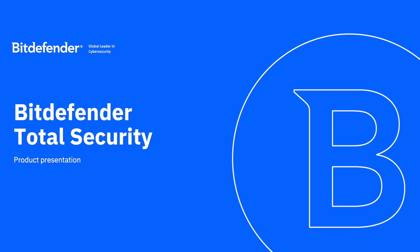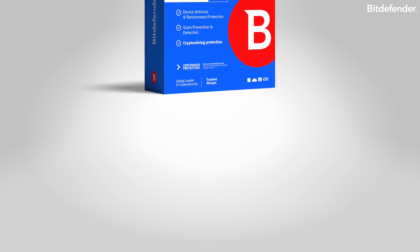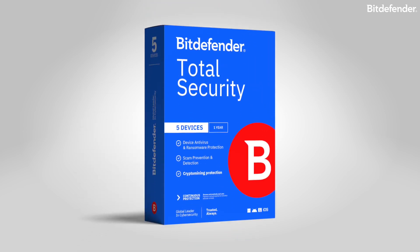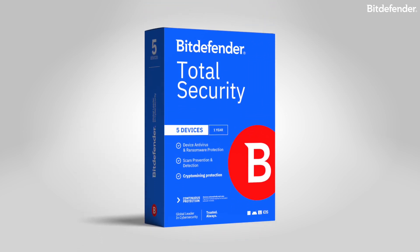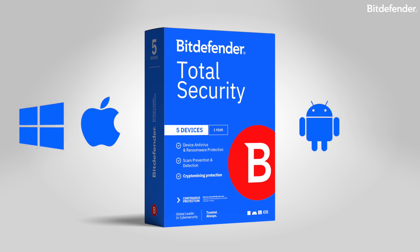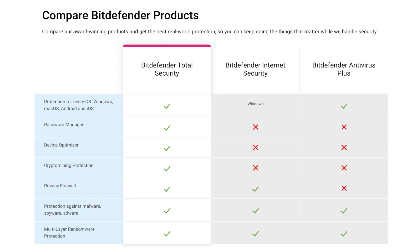Bitdefender Total Security is both the name of an award-winning cybersecurity software for Windows PCs and a security suite that delivers the best anti-malware protection in the industry across Windows, macOS, Android, and iOS. On Windows, the app includes all features of Bitdefender Antivirus Plus and Bitdefender Internet Security, plus crypto mining protection and extensive optimization tools.